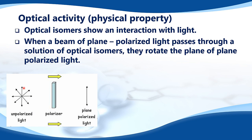Here we have unpolarized light. We can think of light as an electromagnetic wave that oscillates in many different planes. If we pass unpolarized light through a polarizer, then the oscillation of the wave is restricted to one plane — in this case, the vertical plane. This is known as plane polarized light.